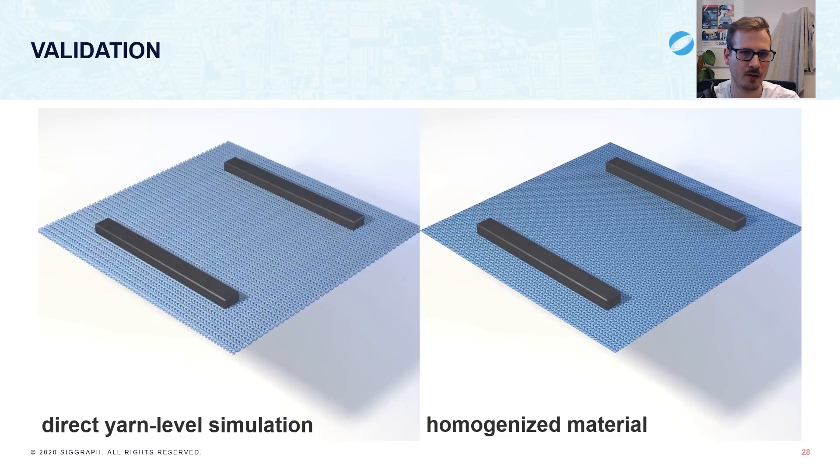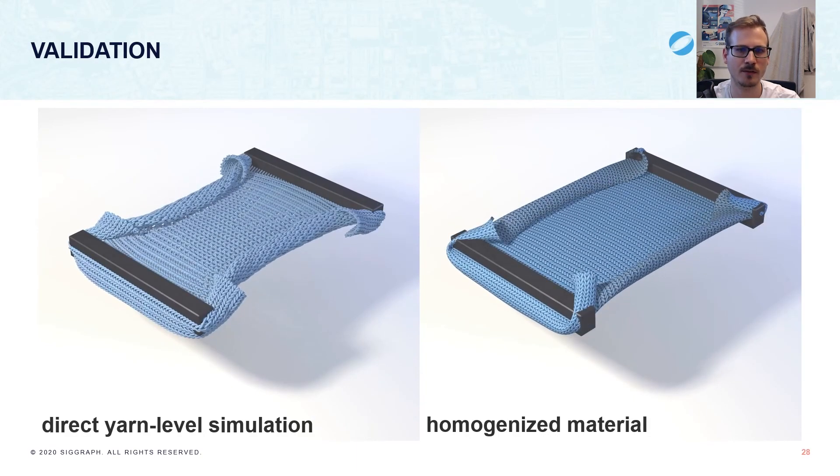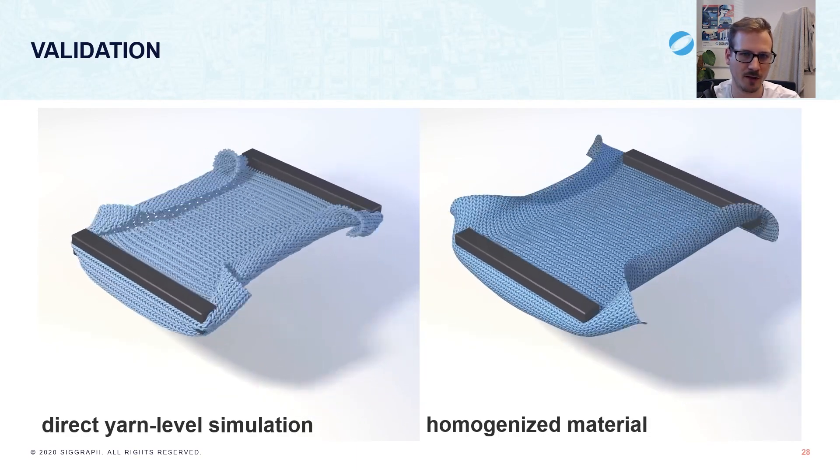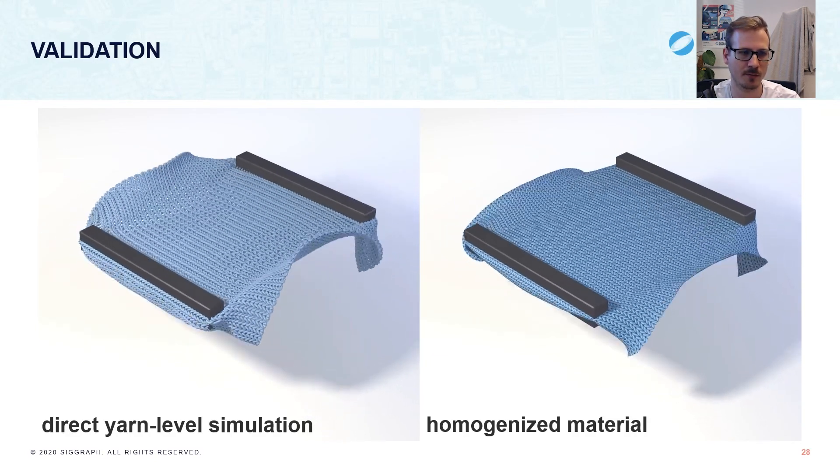The curling behavior is even more pronounced under tension, as shown here. This is a material response that depends on simultaneous stretching and bending. Since we can measure the energy for such deformations in our homogenization procedure, we can fit an energy function that shows this behavior.